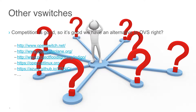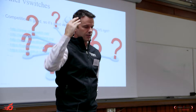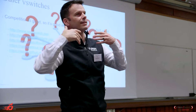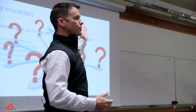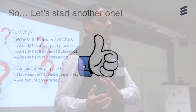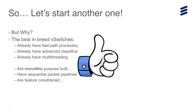The industry said we need virtual switching. The industry said the Linux bridge isn't enough. The industry said look at this OpenFlow stuff, let's try and build around this. And so we have a bunch of solutions all doing more or less the same thing. So why start another one? The best in breed vSwitches already have fast path processing, advanced classification mechanisms, and multi-threading. There's not a lot more to be added in the context of vSwitches. But all of them are purpose-built — they're there to solve a problem, to be a vSwitch. They generally have sequential packet pipelines. VPP brings vector packet processing, which is nothing truly unique. And they're all feature constrained — they go a certain way but don't have all the features.